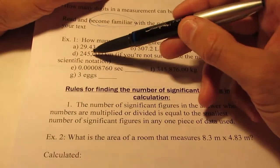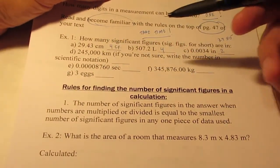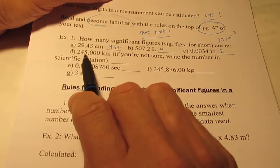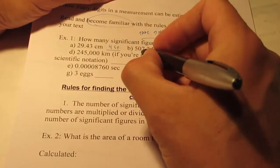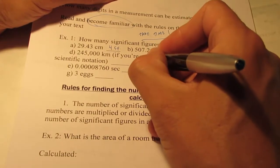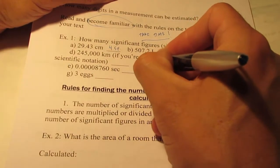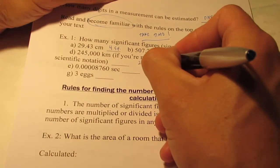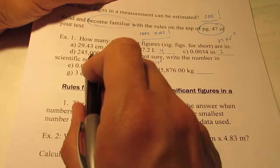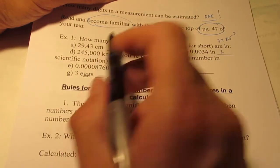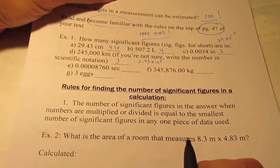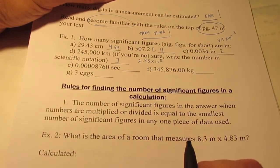Okay, letter D, 245,000 kilometers. Now once again, if you're not sure, we can write the number in scientific form. So 245,000 would be 2.45 times ten to the fifth. So these zeroes are placeholders, they're not significant, so I would say that that had three significant figures in it.